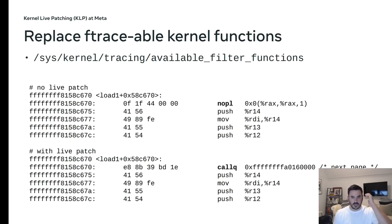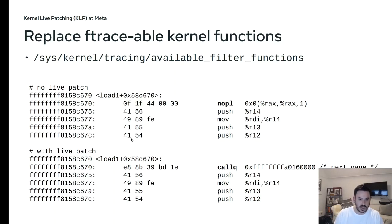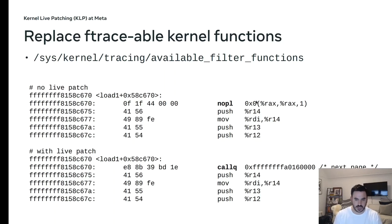This is the NOP instruction that gets patched and called out to with ftrace. Without live patch, we have the NOP instruction. We can overwrite it with live patch to a call instruction, which calls out to the ftrace handler. Pretty simple, super useful.